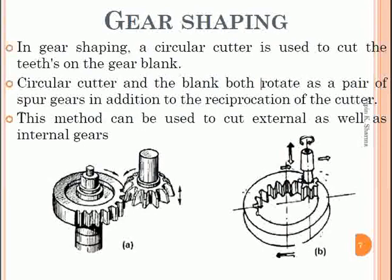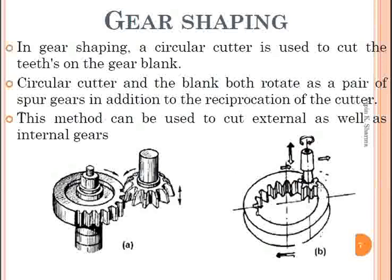The same procedure can be adopted to generate internal teeth. Here, the internal blank is held and the cutter reciprocates and cuts the teeth on the gear blank. The gear blank rotates at a very slow speed so that the whole periphery can be cut in the form of gear teeth.